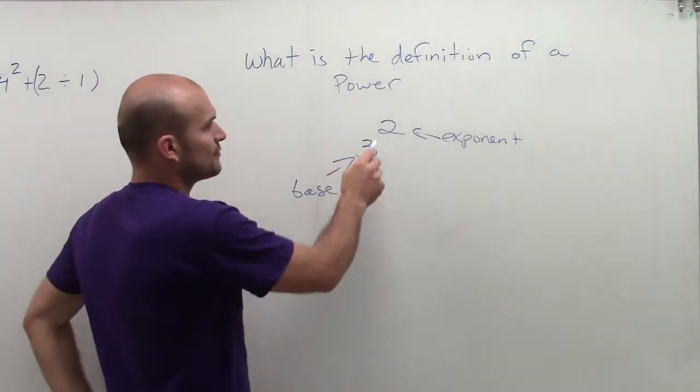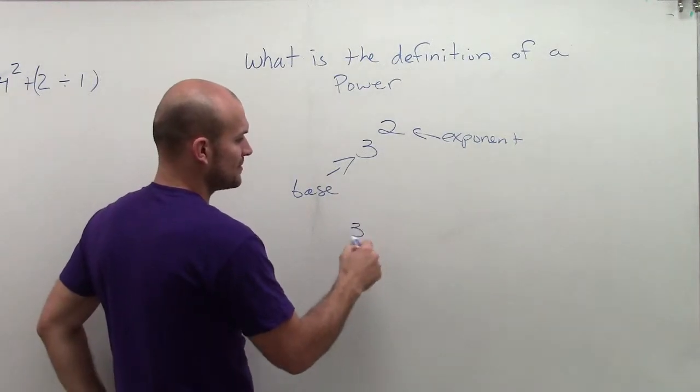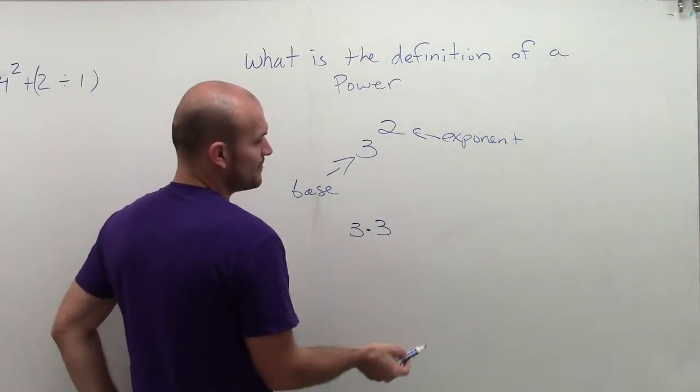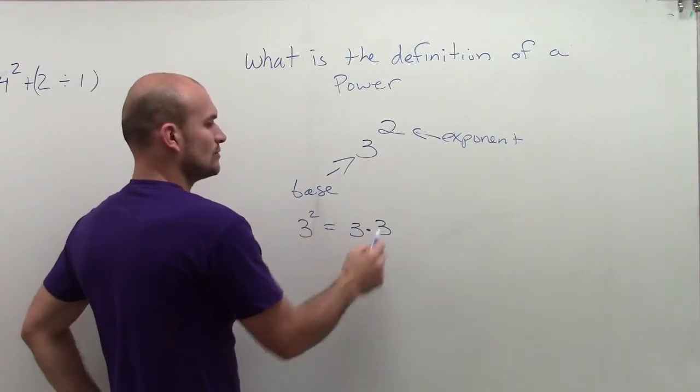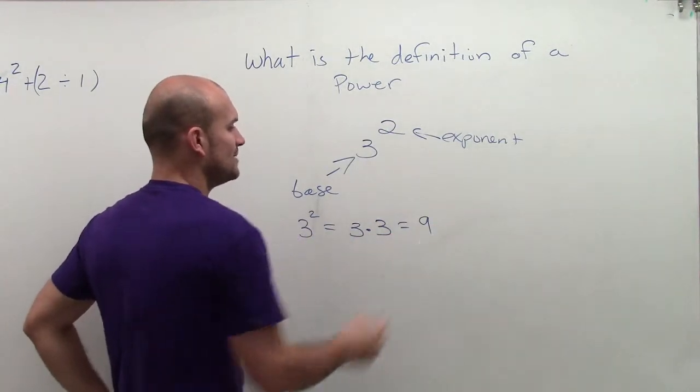So here I have 3. I want to use it 2 times. It would mean 3 times 3. So to simplify 3 squared, that equals 3 times 3, which equals 9.